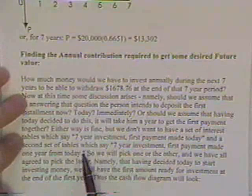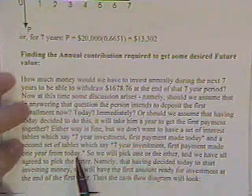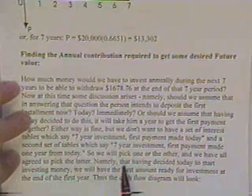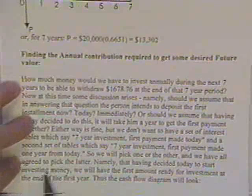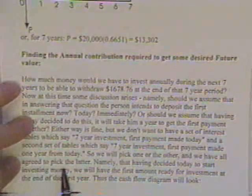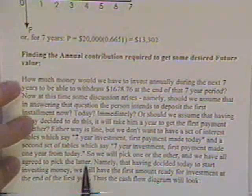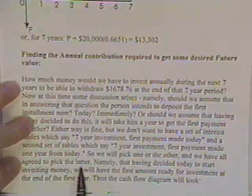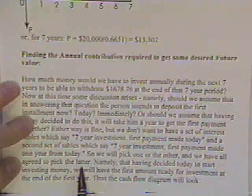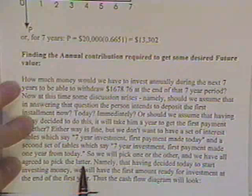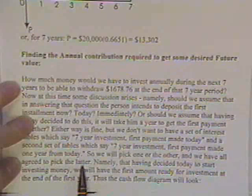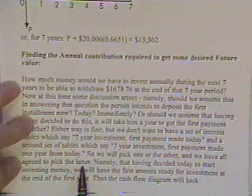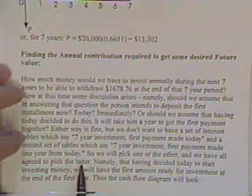Because otherwise we're going to have two sets of tables—one would say seven year investment, first payment made today, and then have another page that says seven year investment, first payment made a year from today. So we're going to pick one or the other and stick with it. And it so happens, long before you and I got here, everybody's agreed to pick the latter. Namely, if you talk about an annuity or an annual amount, the rules will be—our equations will be derived and set up—assuming that it'll take you a year to get the first money to invest in the bank to satisfy that annual amount.